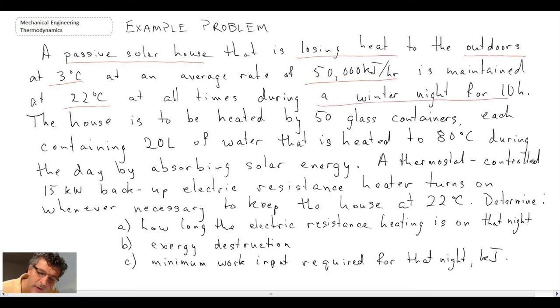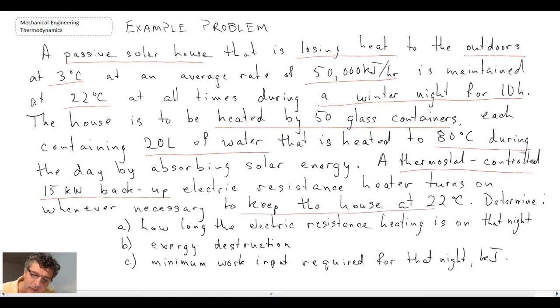We're specifically talking about one winter night for 10 hours. The house is heated by 50 glass containers each containing 20 liters of water heated to 80°C during the day by absorbing solar energy. A thermostat is connected to a 15 kilowatt backup electric resistance heater which turns on whenever necessary to keep the house at 22°C.